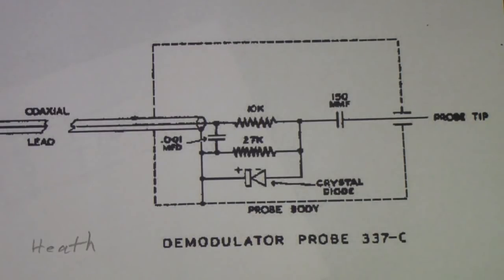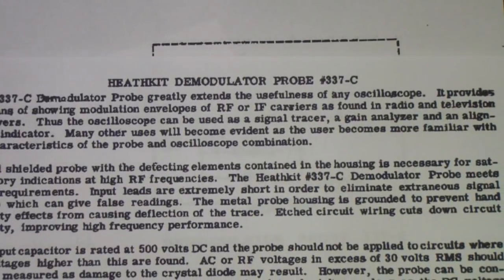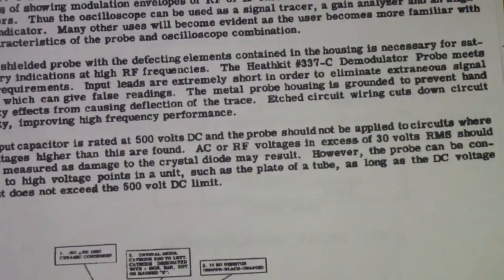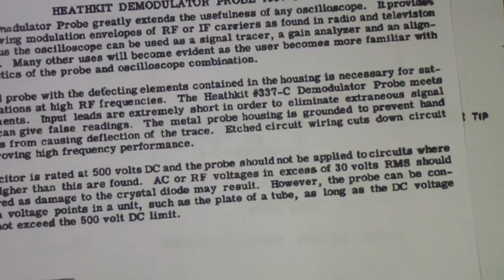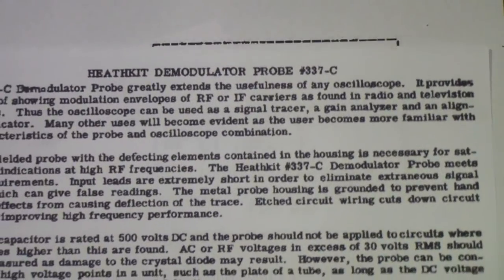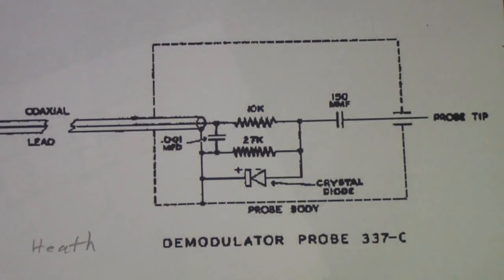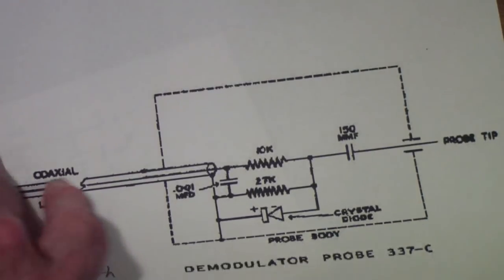So I then knew that what I had was the exact same probe that I was working with here. Well, that actually is a Heath. It's called a 337C Heathkit demodulator probe. And so this was originally intended, and actually the first sweep generator I ever owned was a Heath. I have since then owned a number.